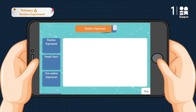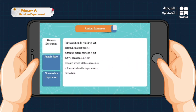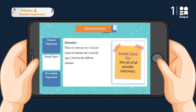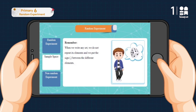A random experiment is an experiment in which we can determine all its possible outcomes before it takes place, but we cannot predict with certainty which of these outcomes will occur. The set of all possible outcomes is called the sample space, symbolized by S, written between curly brackets, and the number of its elements is expressed as n(S). For example, when you roll a dice, the sample space is {1, 2, 3, 4, 5, 6} and n(S) = 6.